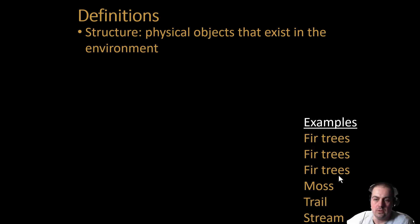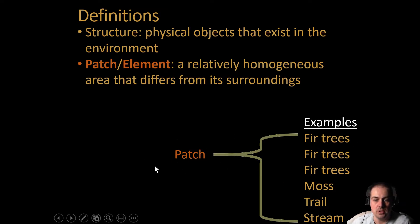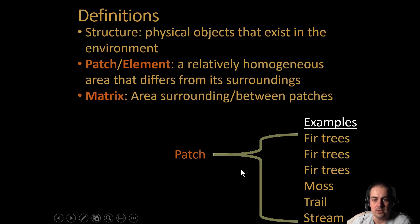Instead of classifying individual objects or structures, it's often beneficial to take objects that are either similar in shape or occur in a similar area and classify them as a single unit. That would be what you call a patch, or an element — simply defined as a relatively homogeneous area that differs from its surroundings. For example, all of those structures occurring together in a climax boreal forest can be summarized as a single climax boreal forest patch.